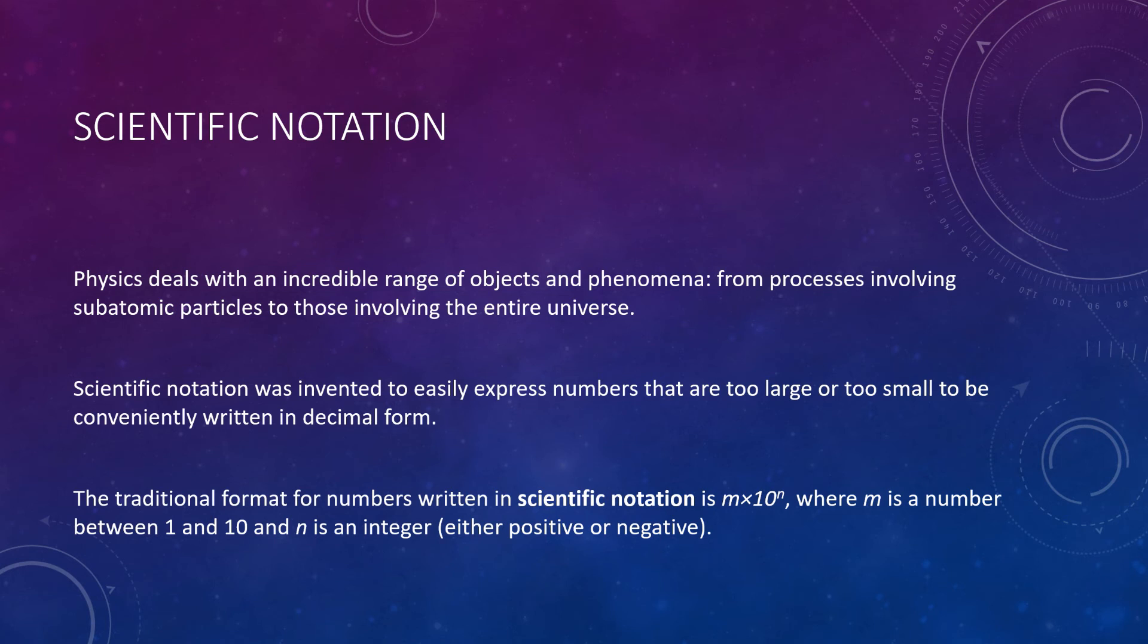Furthermore, beyond requiring you to write all of those zeros, writing the quantities this way makes it unclear how many significant figures there actually are involved in the number. For the distance to the Moon, for example, how many of those digits were significant? Was it 3? Was it 4? Was it all 9? How do we know? So, physics deals with an incredible range of objects and phenomena, from processes that involve subatomic particles all the way up to objects that span universe-sized scales.